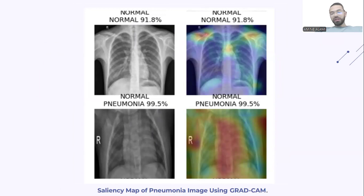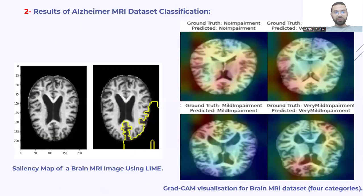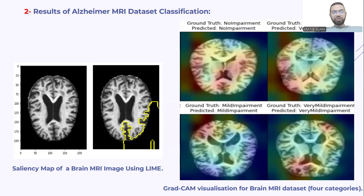For Grad-CAM, a color bar is used in which red indicates the region where the classifier focuses the most, followed by orange, yellow, and green, while blue indicates the region where it focuses the least. For the Alzheimer's MRI dataset, we used the same techniques to generate explanations, and these are the results for LIME visualization and Grad-CAM visualization.